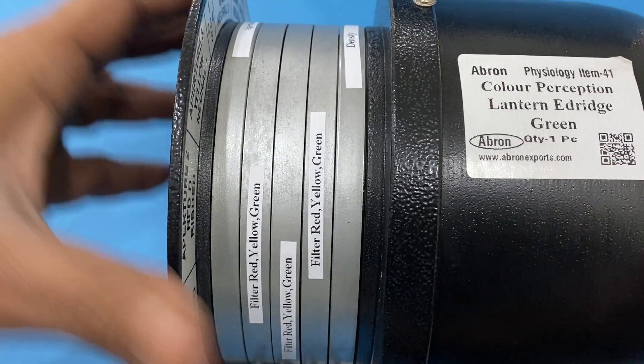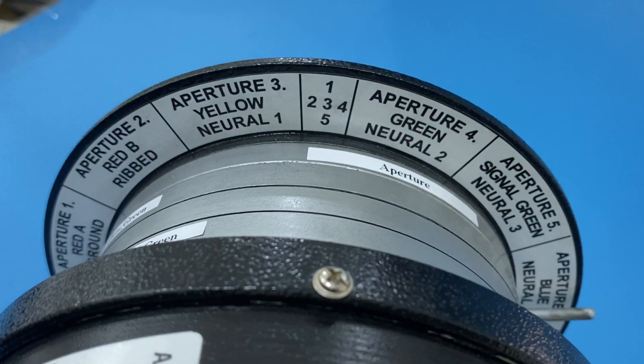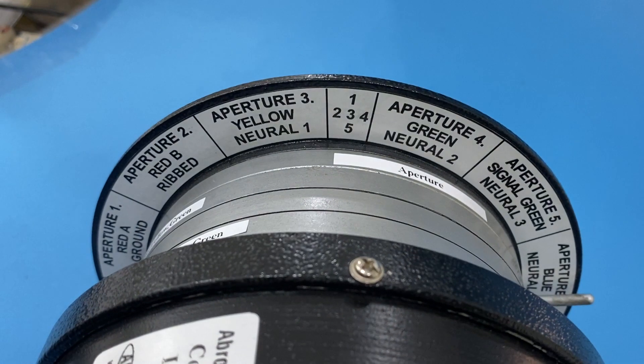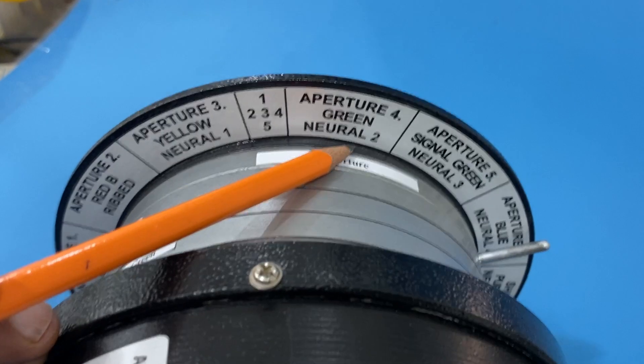We have a combination of filters that tell you what to do and what is visible. For example, aperture 4 with green color, second aperture with yellow and neutral, aperture with red - all these combinations are shown.